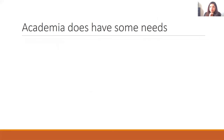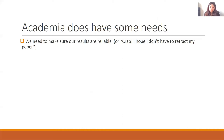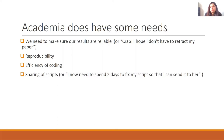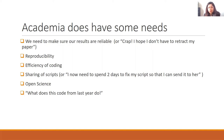However, academia does have some needs. We need to make sure first our results are reliable — or in other words, I hope I don't have to retract my paper because of a bug in my code. We need to make sure that our science is reproducible, and for that we need our results to be reproducible. And our results are dependent on that piece of code. So if our code gives us different outputs every time we run it, our reproducibility takes a hit. We also want to be efficient at coding and able to share our scripts with other people in the interest of being open and transparent — open science.